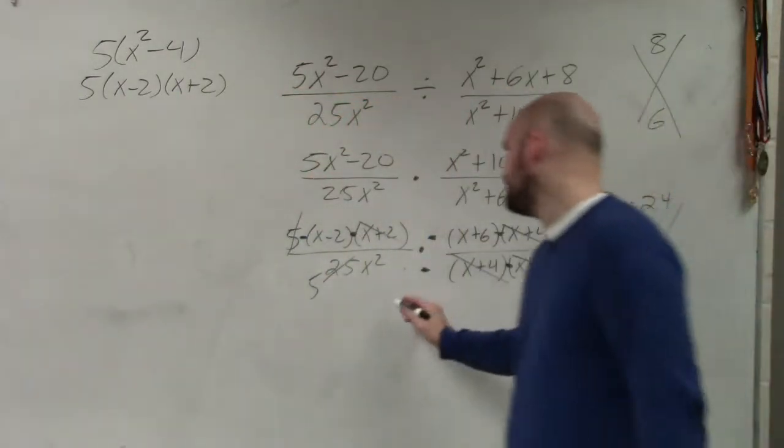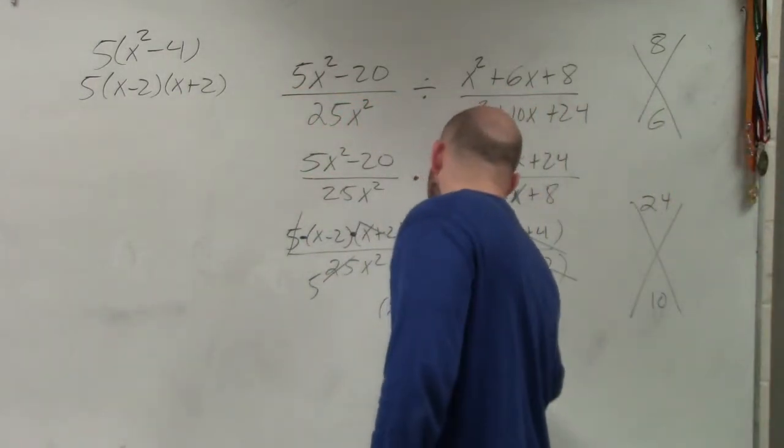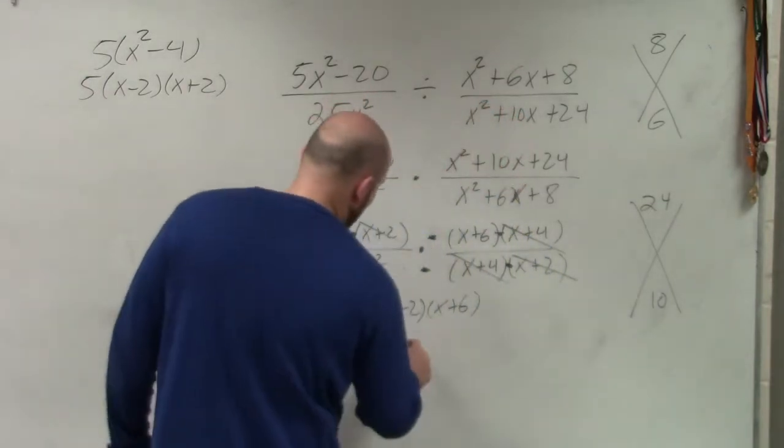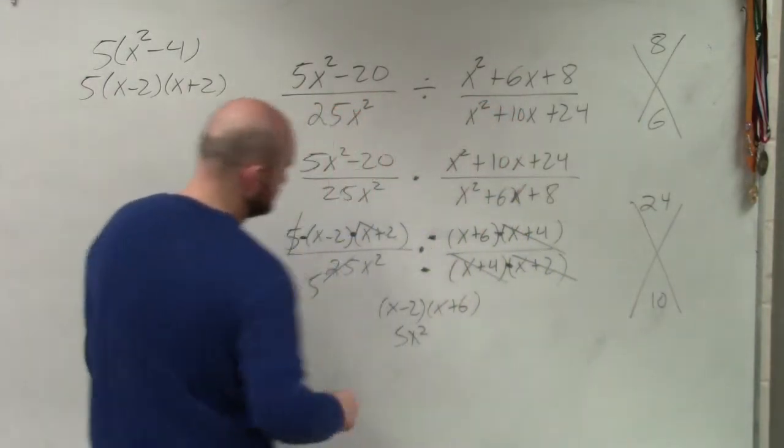Therefore, my final answer is going to be (x - 2)(x + 6) all over 5x². Well, actually, that's it.